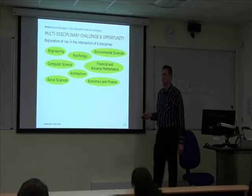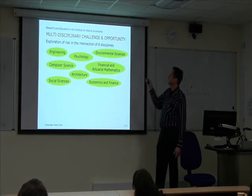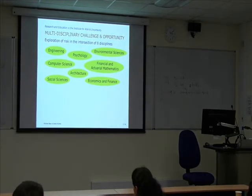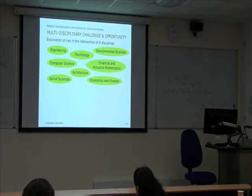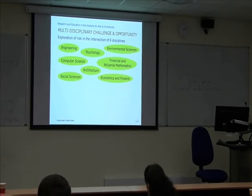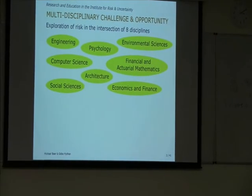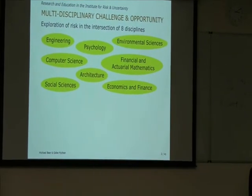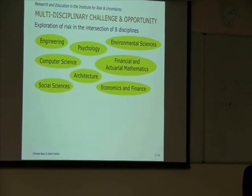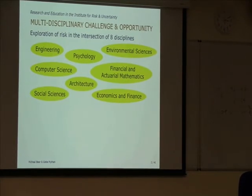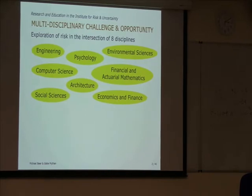Why do we study risk and what do we actually study? We study risk and this is a multidisciplinary challenge and opportunity. We have to look at risk not only in one discipline but across many disciplines. What we do in the Institute for Uncertainty is we look at risk and uncertainty across eight disciplines. The first question is, why do we do that?